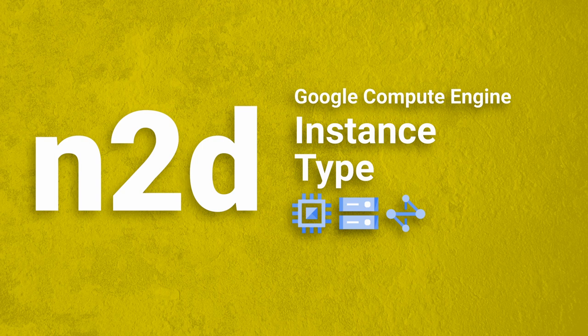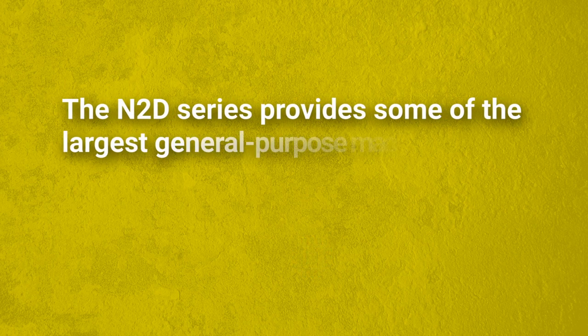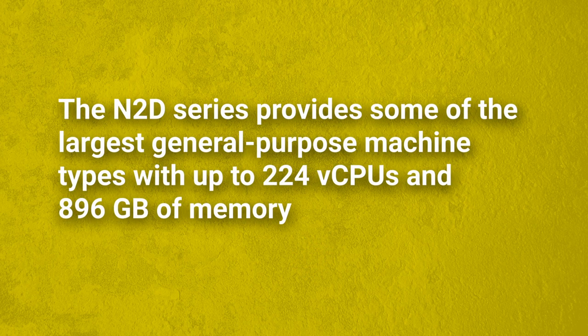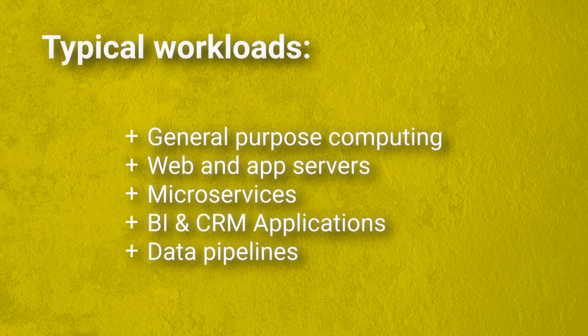Google Compute Engine N2D Instance Type. The N2D series provides some of the largest general purpose machine types with up to 224 vCPUs and up to 896 gigabytes of memory. Typical workloads include general purpose computing, web and app servers, microservices, BI and CRM applications, and data pipelines.